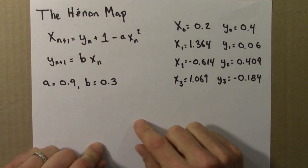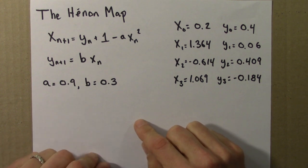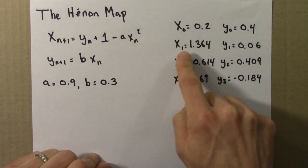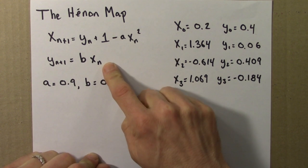We can iterate the Hénon map very similar to how we iterated the logistic equation. We just start with a value, in this case it's two values, and we just get the next value by applying the function over and over again.